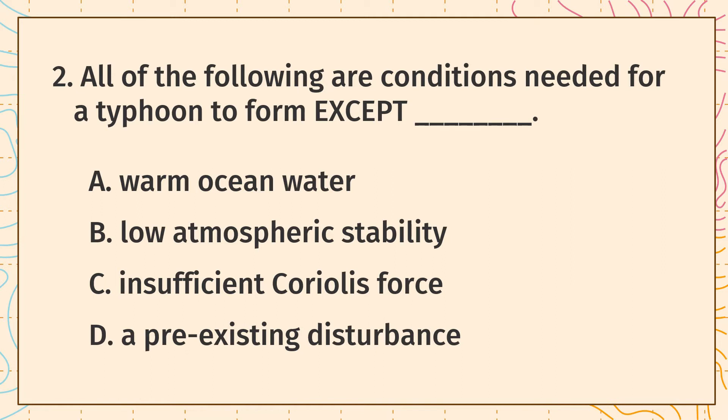All of the following are conditions needed for a typhoon to form except: A. Warm ocean water. B. Low atmospheric stability. C. Insufficient Coriolis force. D. A pre-existing disturbance.